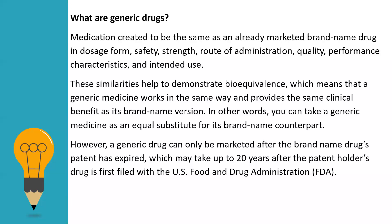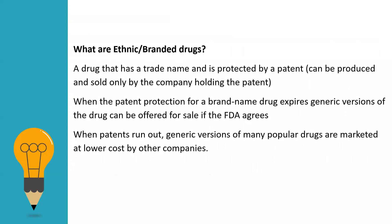Now let's look at what ethnic or branded drugs are. A branded drug has a trade name and is protected by a patent, meaning it can be produced and sold only by the company holding the patent. When the patent protection for a brand name drug expires, generic versions of the drug can be offered for sale if the FDA agrees. Only after the brand name drug's patent is completed can the generic version enter the market.